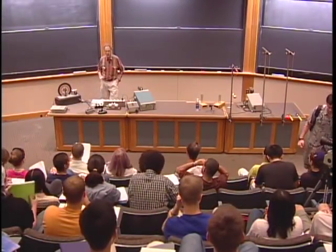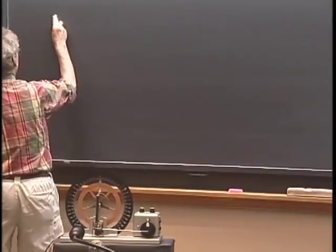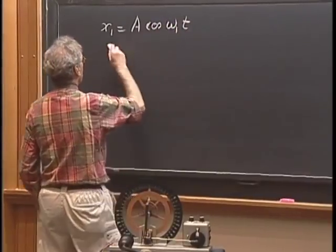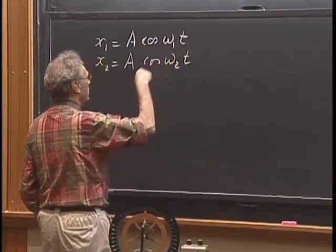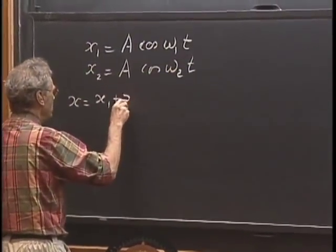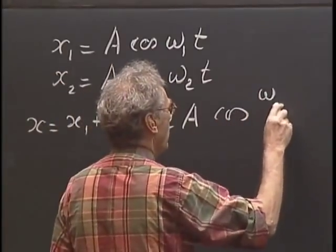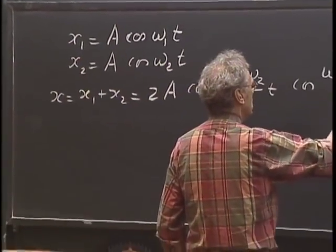I will start today with a very interesting phenomenon known as the beat phenomenon. Suppose you have two simple harmonic motions with the same amplitude but different frequencies: x1 = a·cos(ω₁t) and x2 = a·cos(ω₂t). If you sum them, you get 2a times the cosine of half the sum (ω₁+ω₂)/2 · t, times the cosine of half the difference.